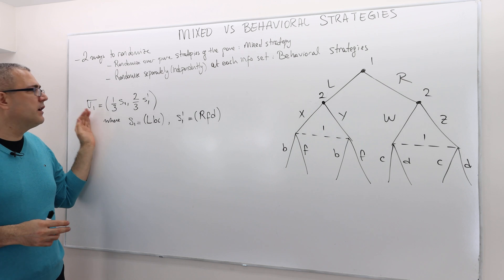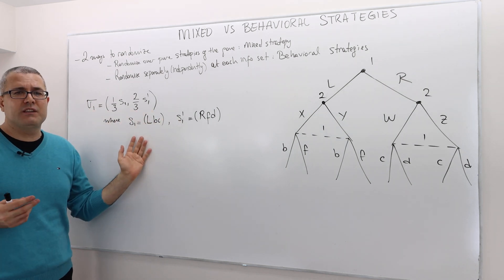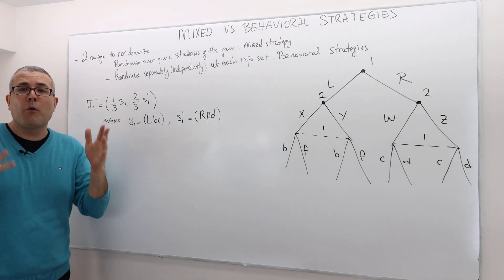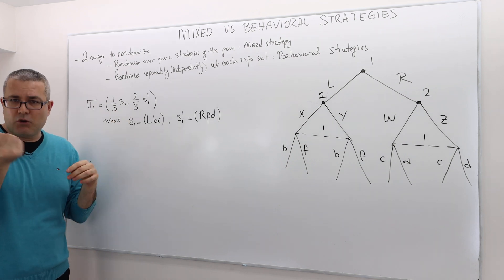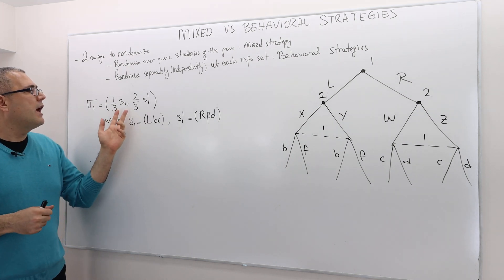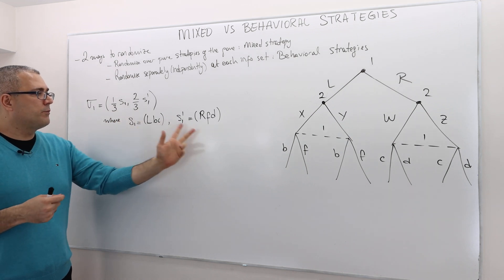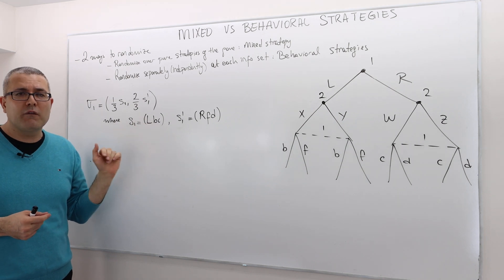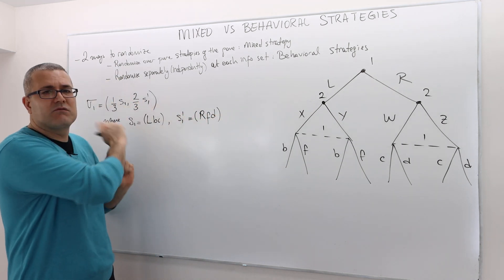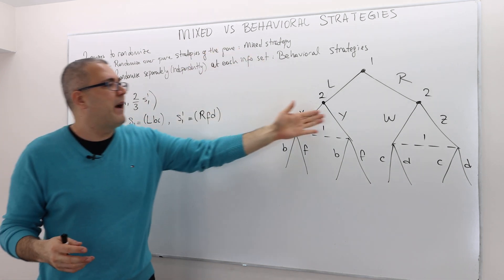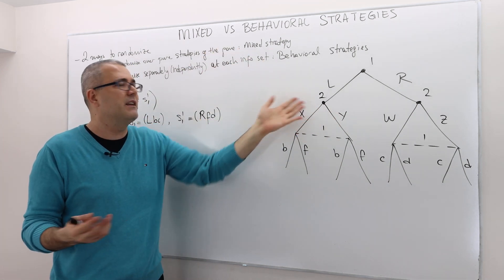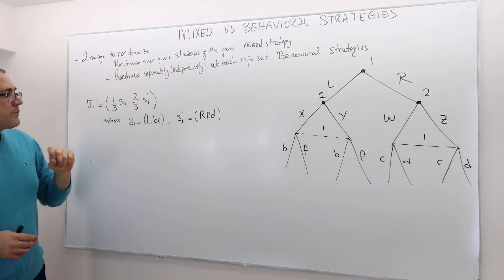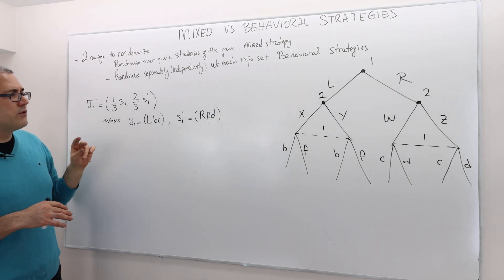Think of player 1 choosing this randomization over these two strategies and then giving it to some robot. The robot randomizes — it tosses an unfair coin — and one of those pure strategies will be realized. The robot then follows according to this strategy profile: for example, if one strategy is realized, it chooses left, and then independent of the second player's move, chooses B.